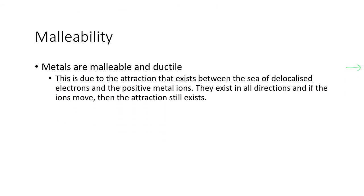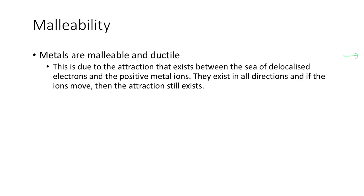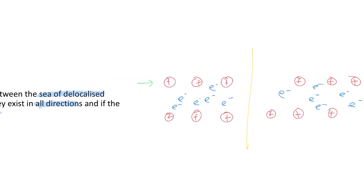Now, how does that explain the four properties that we went through in the last video? Let's have a look. Malleability. Metals are malleable and ductile. You just need to remember that. This is due to the attraction that exists between the sea of delocalized valence electrons and the positive metal ions. They exist in all directions, and if the ions move, the attraction still exists. So what does that mean? Let's have a look.